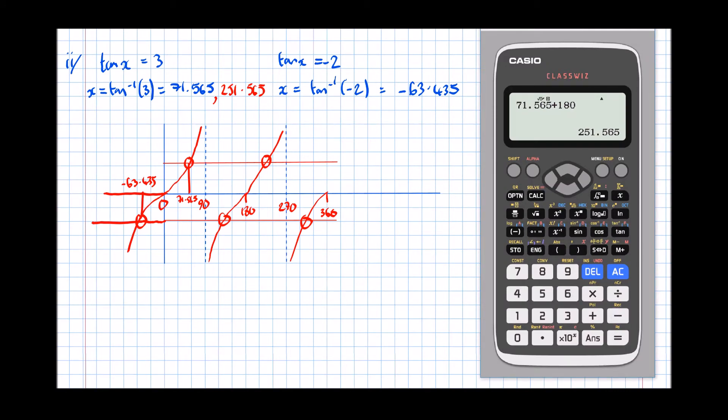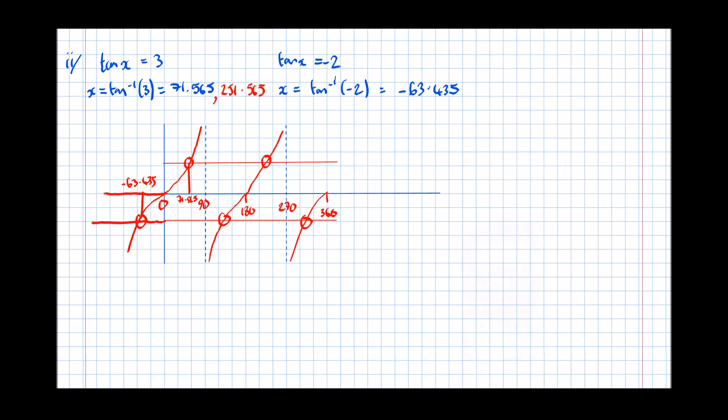So minus 63.435, we're going to add 180, which gives another solution of 116.565.